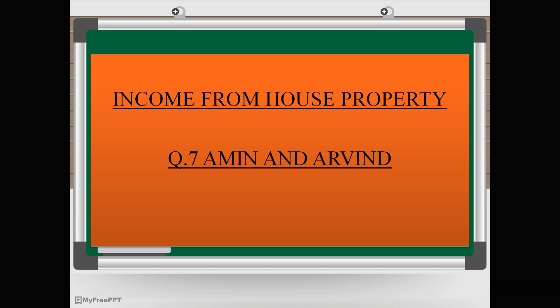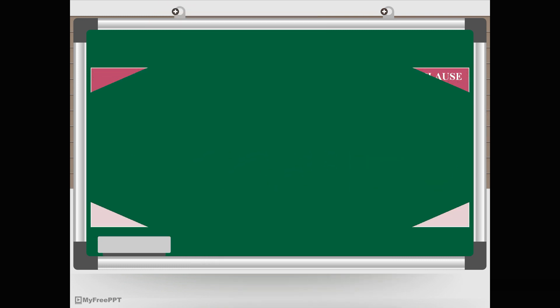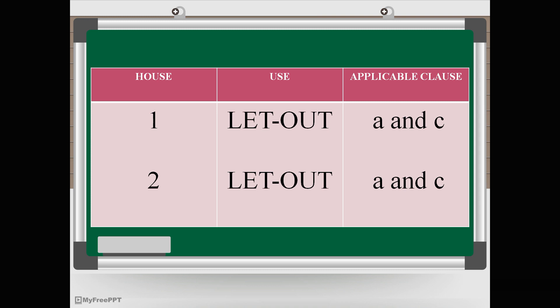First, let us focus on let-out houses only - house number 1 and house number 2. House 1 is let-out, vacancy period is available - one month for house number 1 and 15 days for house number 2. That means A and C are applicable for both houses. But before we start A and C, we need to find out municipal value, because without municipal value we cannot find close A. So municipal value is a must. Let us find out.